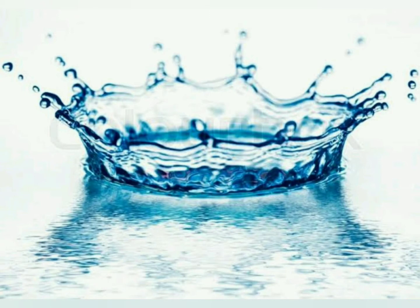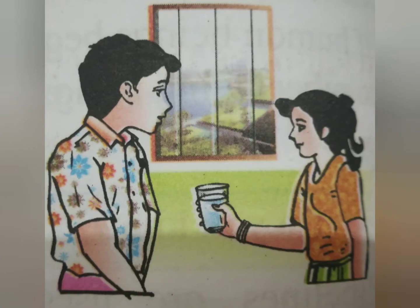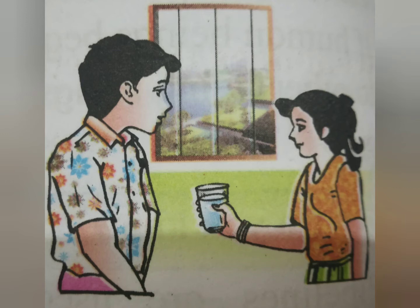Lesson number 10 — More about Water. Children, here is a picture in front of you. There is a glass of water in the hand of a girl and you have to observe the colour of the water. What colour is it? No colour? Yes, water does not have colour.